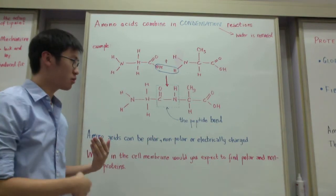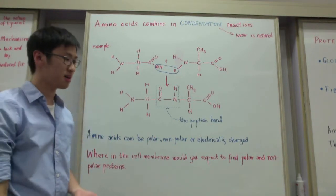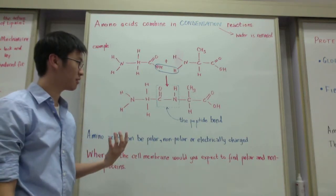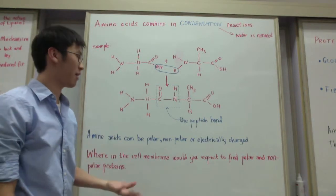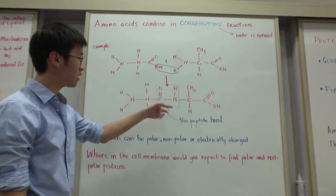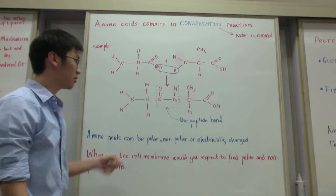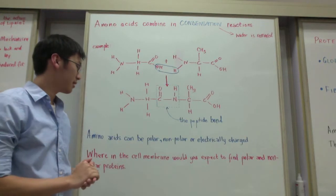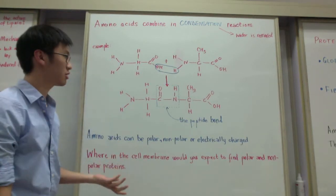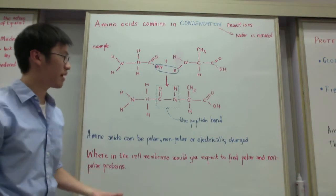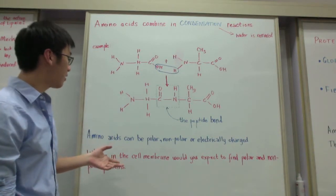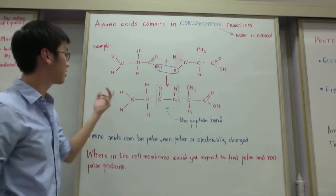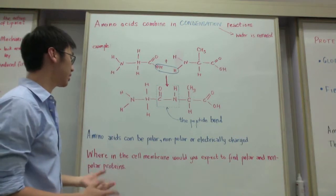This connection forms something called a peptide bond. The way to remember the peptide bond is that it contains the four most common atoms found in the human body: carbon, nitrogen, oxygen, and hydrogen. Amino acids can be polar, nonpolar, or electrically charged, and this is dependent on the side groups. For example, glycine is nonpolar because its side groups are just two hydrogens and therefore don't have an electronegative difference.